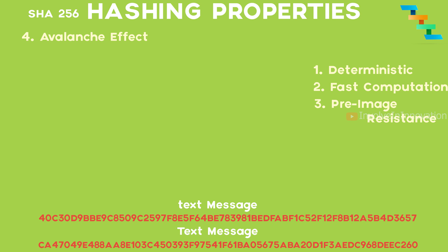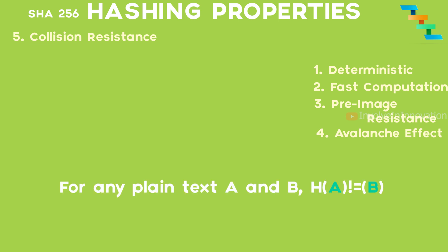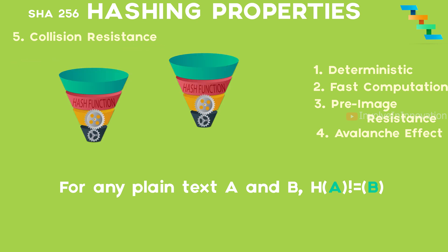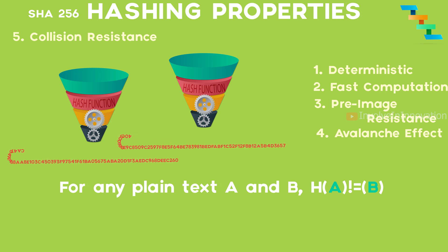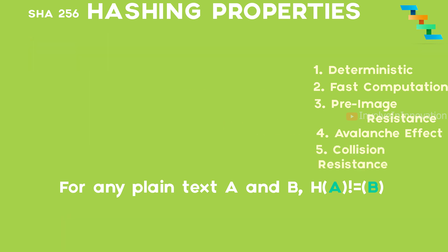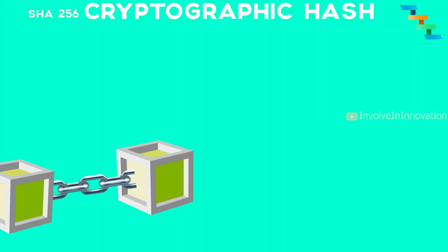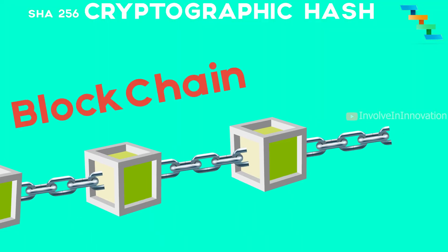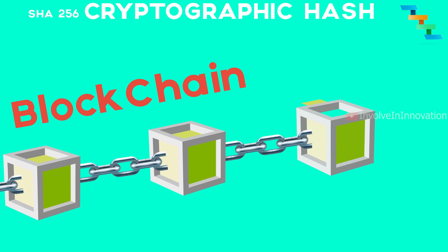The next very important property is collision resistance. For any two different input strings A and B, the hash value of A and the hash value of B must be different. That is, hashes of different input strings must always be unique. In the blockchain, each block contains the cryptographic hash of the previous block, transactional details, and a timestamp.